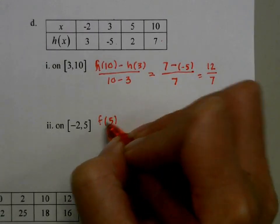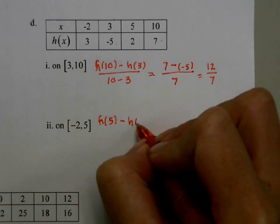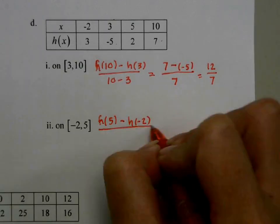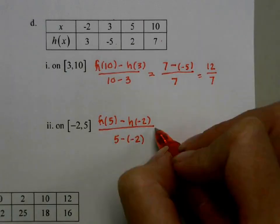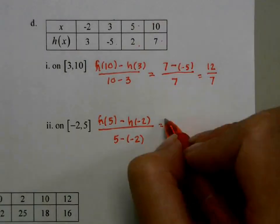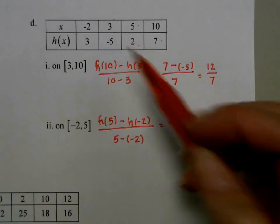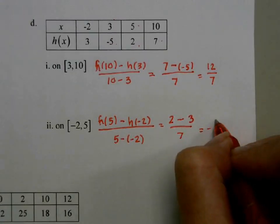Same thing here. h of 5 minus h of negative 2 over 5 minus negative 2. According to my table, h of 5 is 2, h of negative 2 is 3. And we get negative 1 over 7.